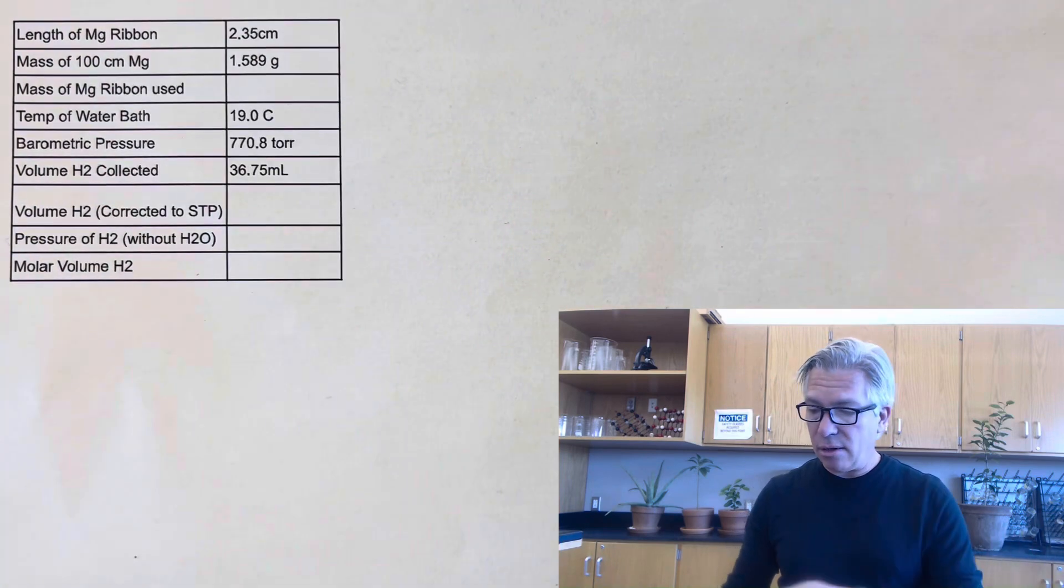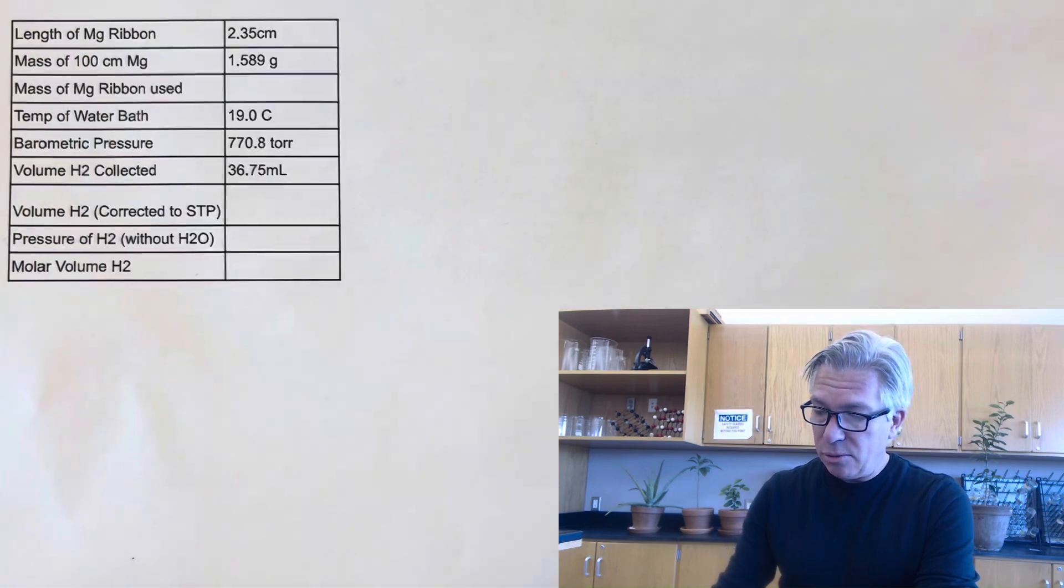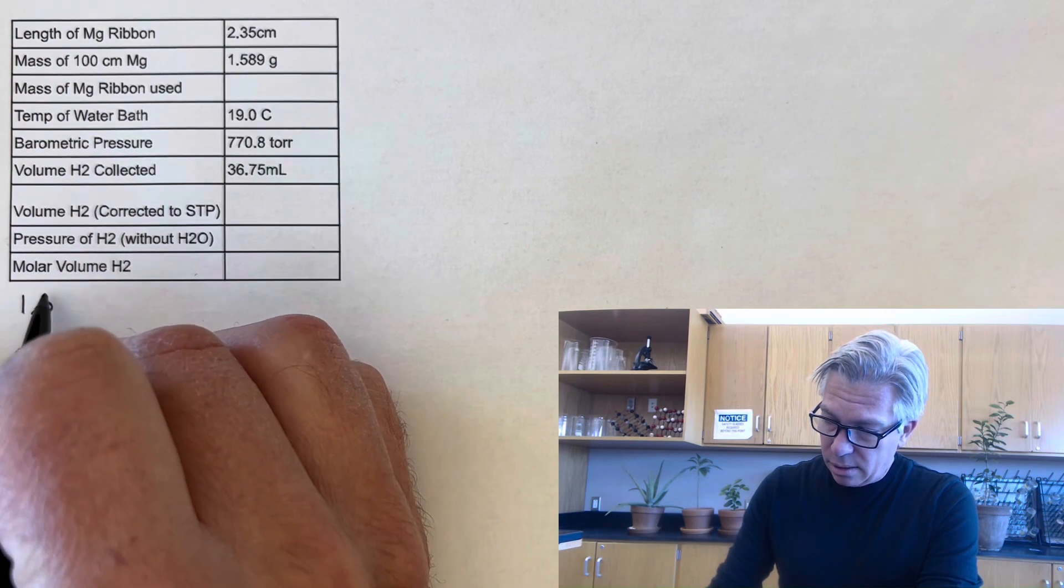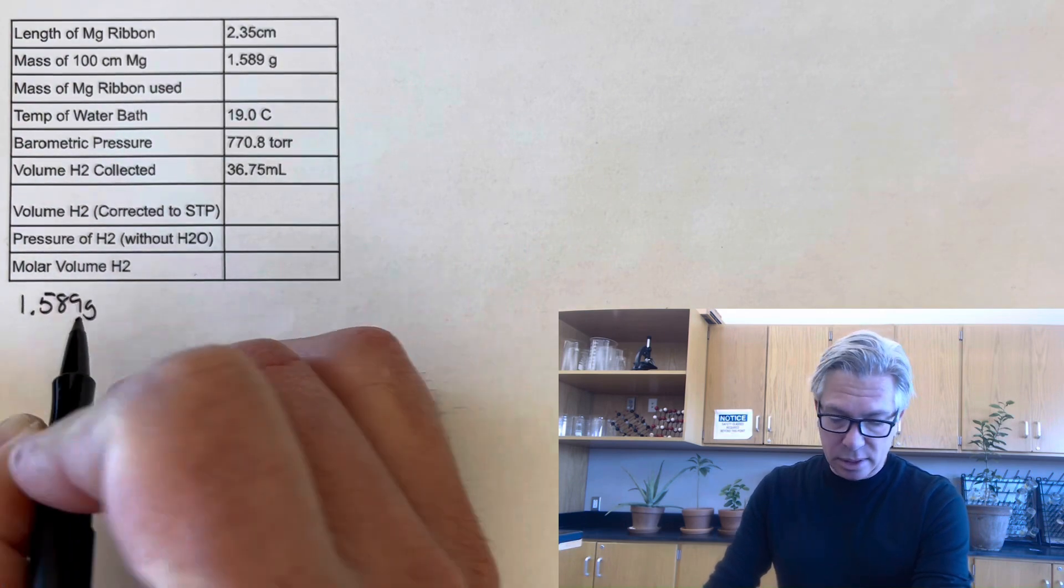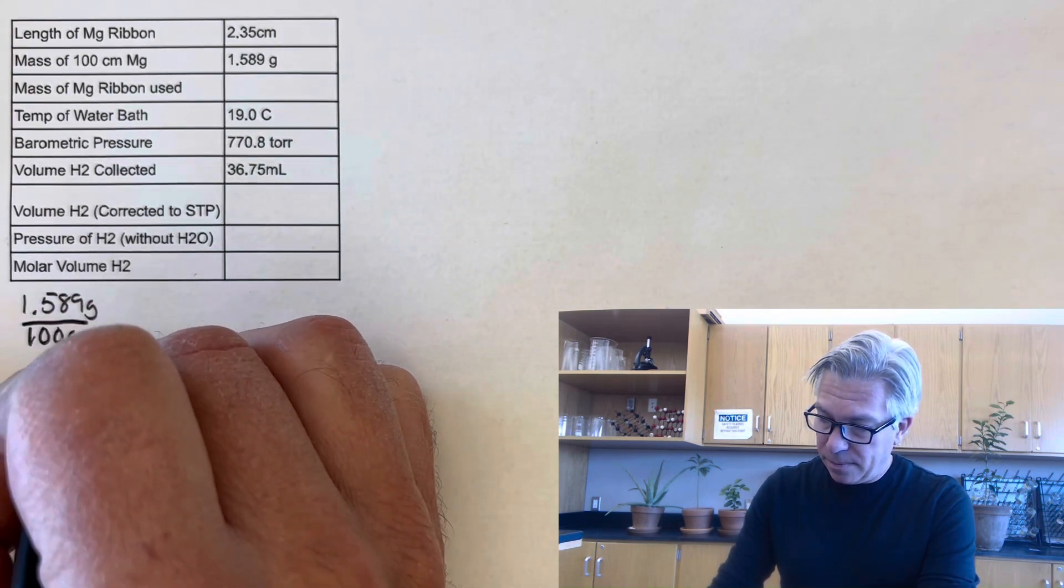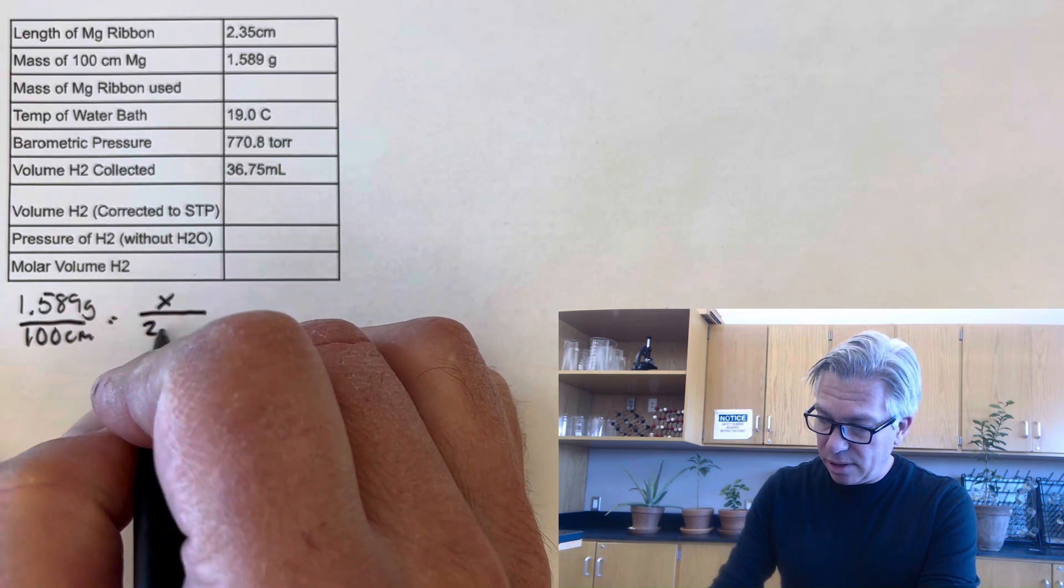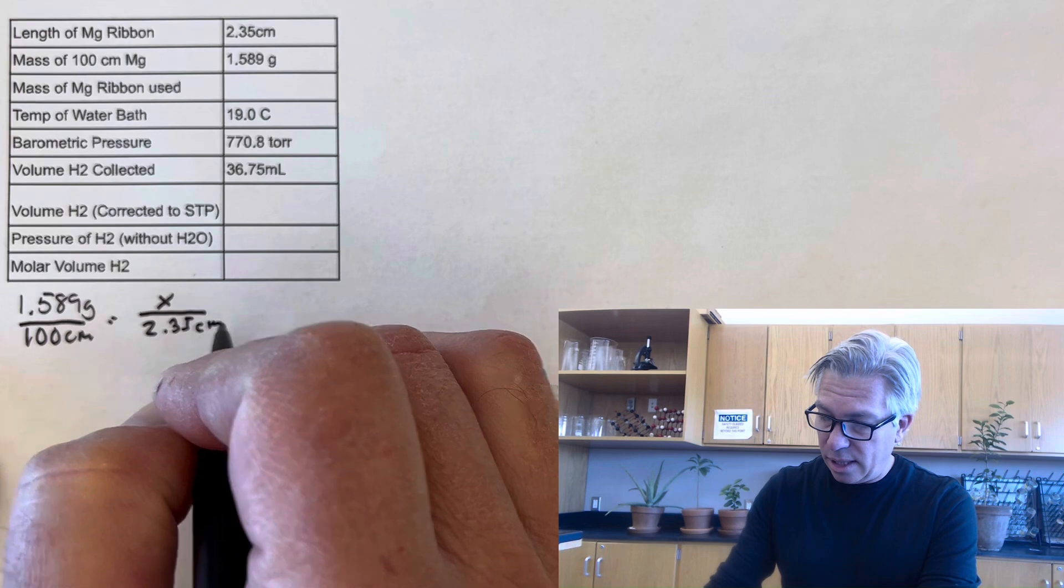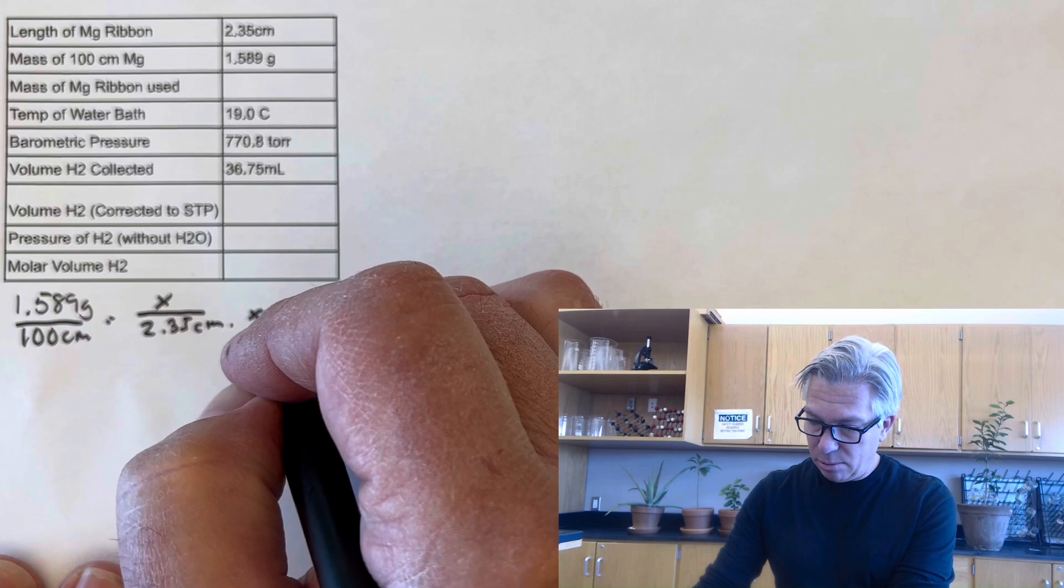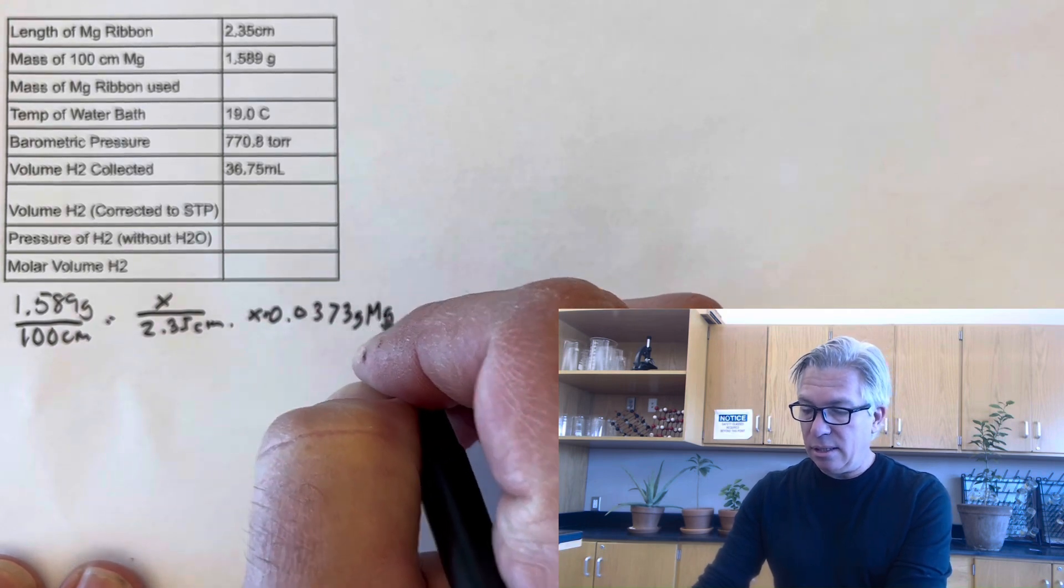The length of my ribbon is 2.35 centimeters. So I'm just going to set up a little ratio where 1.589 grams was the entire 100 centimeters of magnesium. And that was for 100 centimeters. So I want to know what mass would be proportionally for only 2.35 centimeters that I used. All right. And when I do that calculation, I get x equals 0.0373 grams of magnesium that I used.